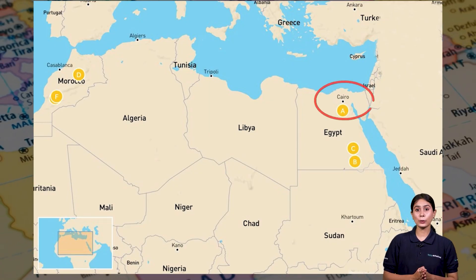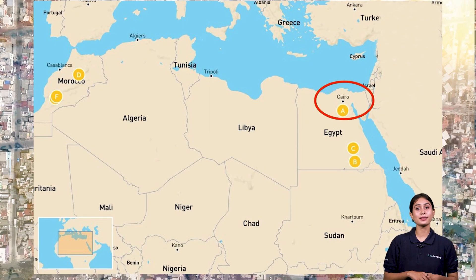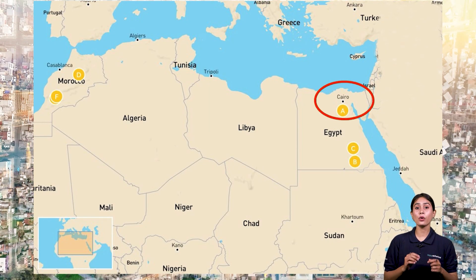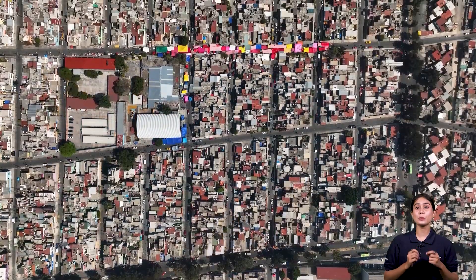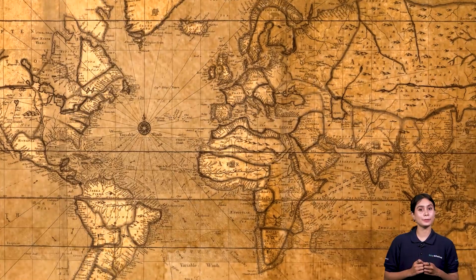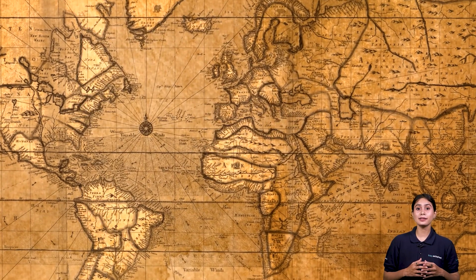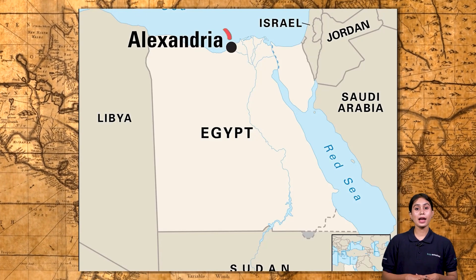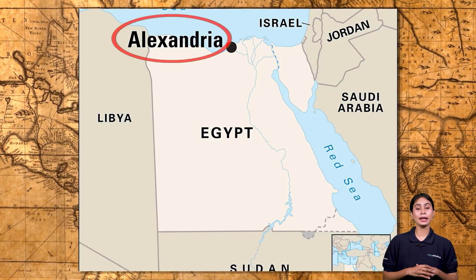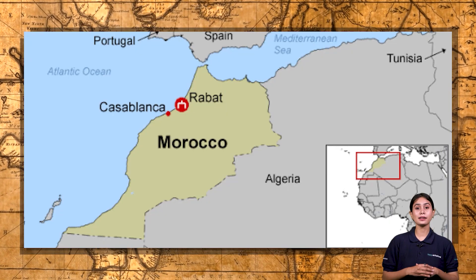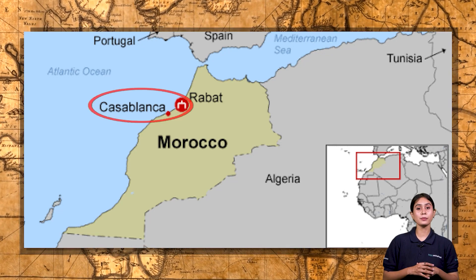Cairo, the capital, is the most populous city with over 22 million people. Other large cities include Alexandria in Egypt and Casablanca in Morocco.